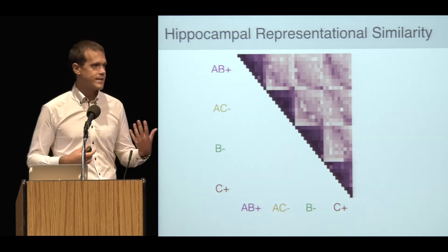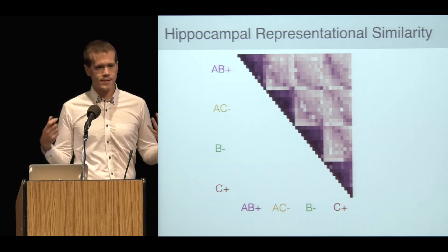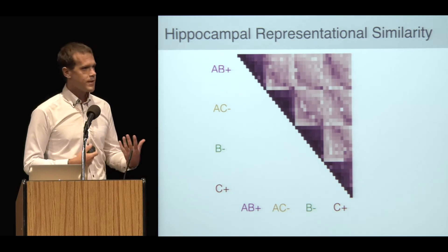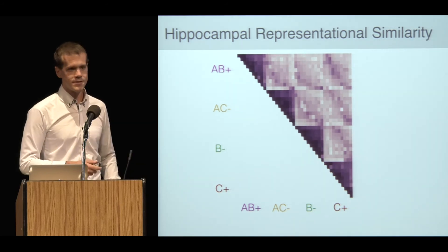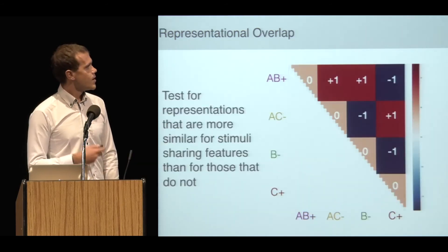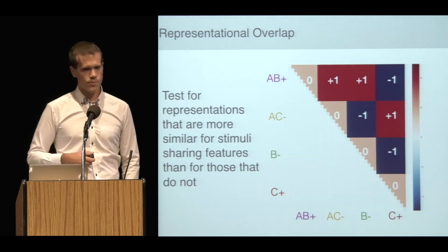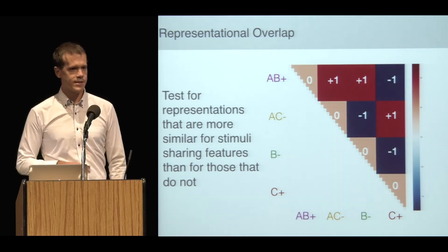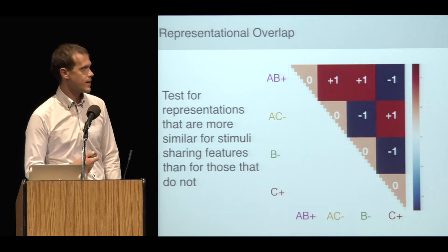You can see just from looking at this matrix that there's stable representations in the hippocampus across repetitions of the same stimulus. This should be a good sanity check because if a region is supposed to supply representations useful for learning, they better be stable across repetitions of that thing.